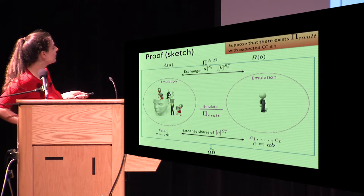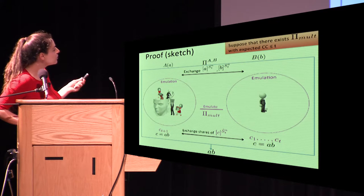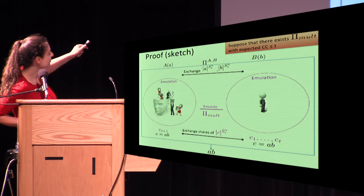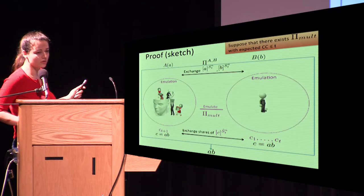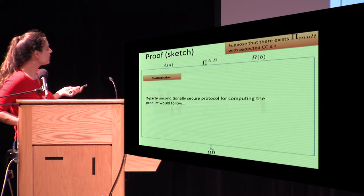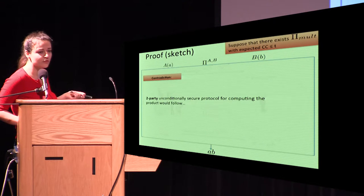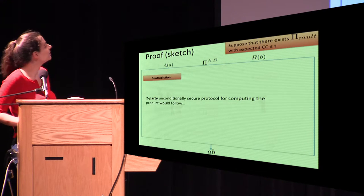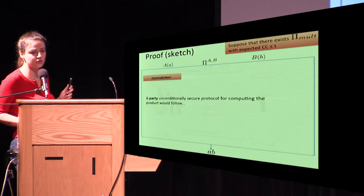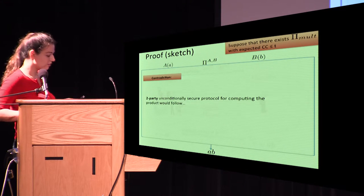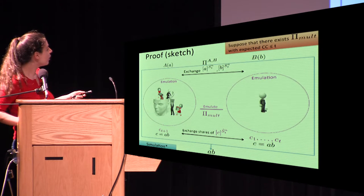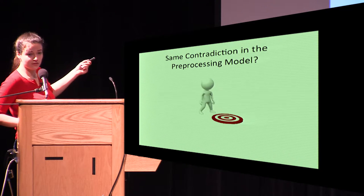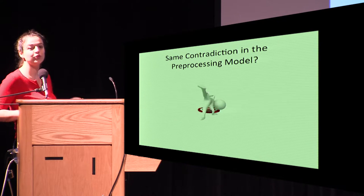The contradiction comes from the fact that we know it's impossible to do two-party computation in the information-theoretic setting from scratch — this is well-known. But we just showed we did it. So here is where the contradiction lies: we showed a two-party protocol computing A×B, which is impossible. This argument works for the honest majority case.